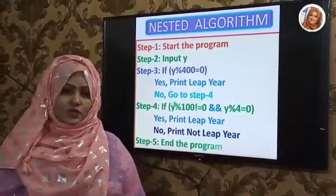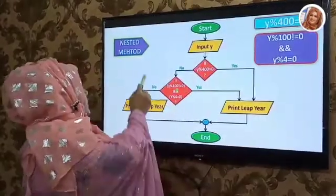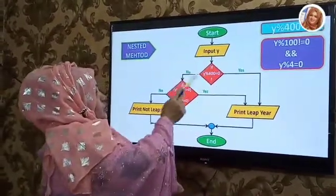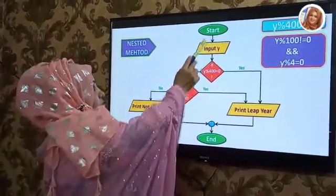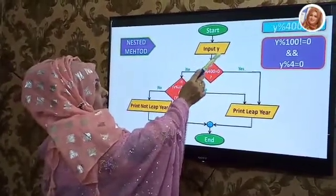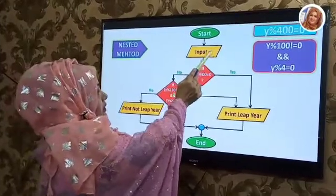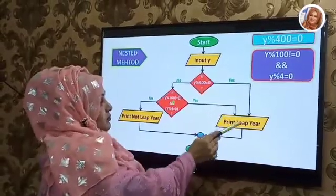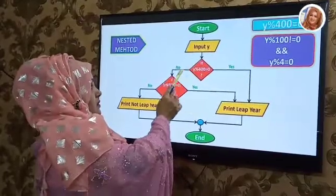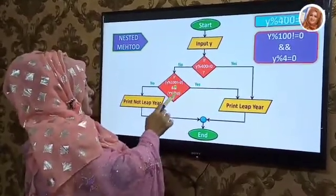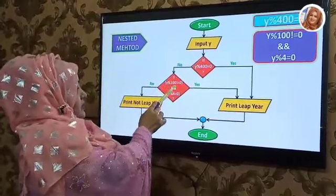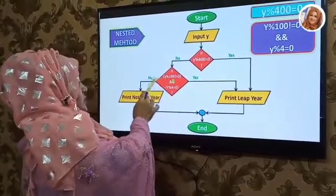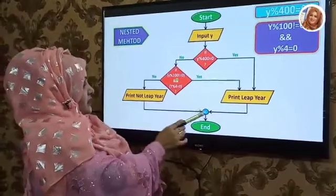Now let's see the nested flowchart. This is the nested method flowchart. Here we use conditions separately. First, an oval shape for start. Second, input Y, where Y is year. The first condition: if true, print leap year. If false, we go to another condition. If this second condition is true, print leap year; if false or no, print not leap year. Here is a connector.